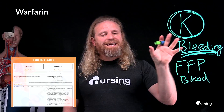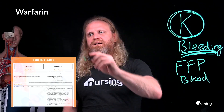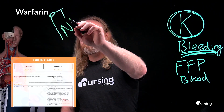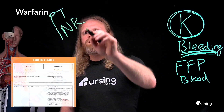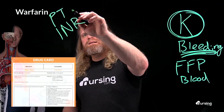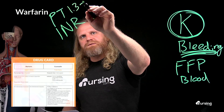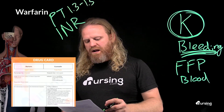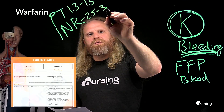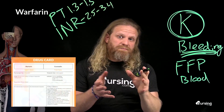Aside from vitamin K and bleeding, we need to watch our patients' bleeding times — specifically PT and INR. For PT, we want a therapeutic range of 1.3 to 1.5. For INR, we want a therapeutic range of 2.5 to 3.4. When our patient is in that range, that's the therapeutic range for warfarin therapy.